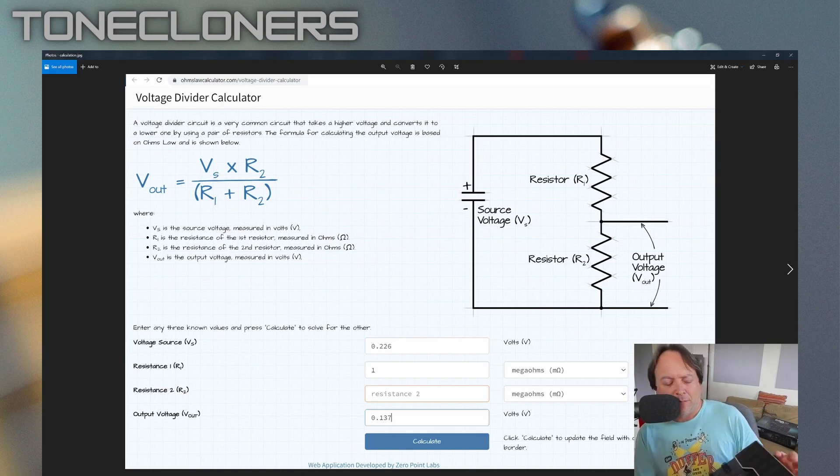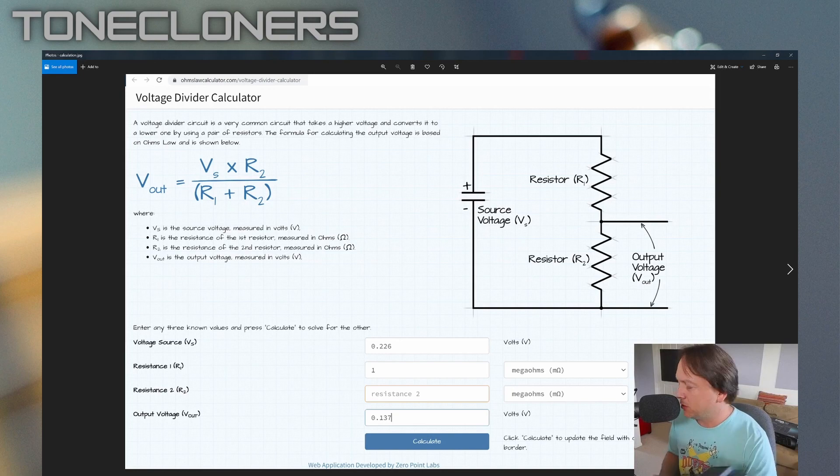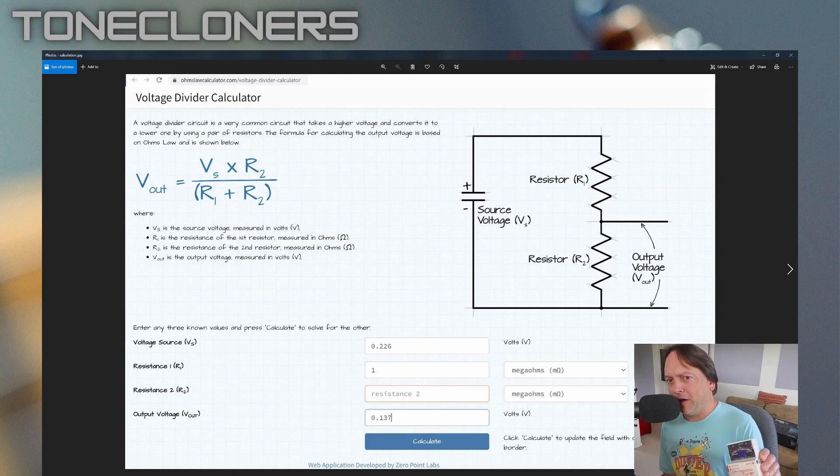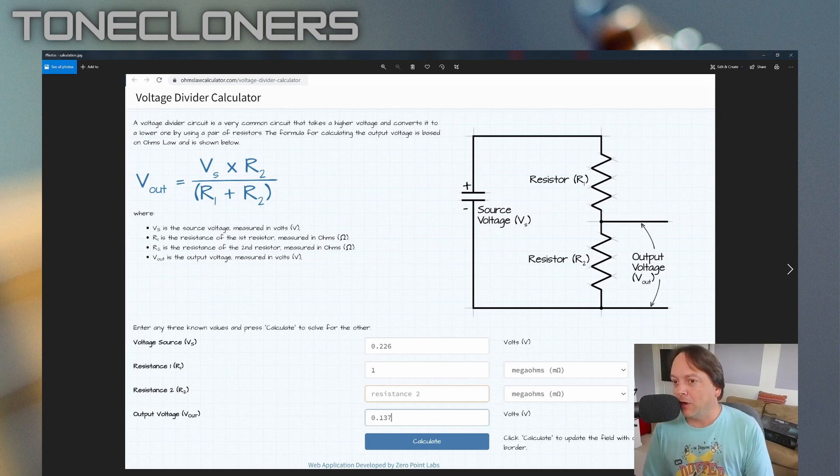Recently I posted a video about the Line 6 Pod Go and one of the issues I was having where the guitar was just losing all its top sparkle being plugged into the Pod Go versus if it went via a buffer first, which led me to believe that the input impedance of the Pod Go was not one megaohm as stated.